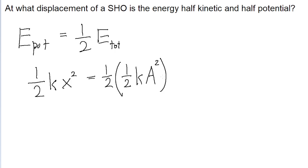So now let's do some algebraic simplification here to solve for the displacement. Both terms have a one-half that can be cancelled out. Both terms have a spring constant that can be cancelled out. And what we're left with is that x-squared is equal to one-half of the amplitude squared.